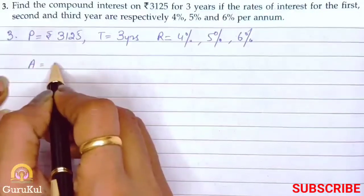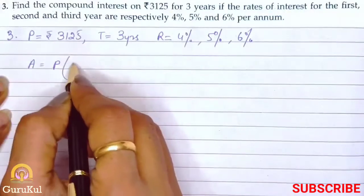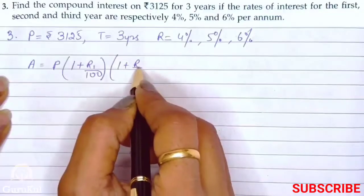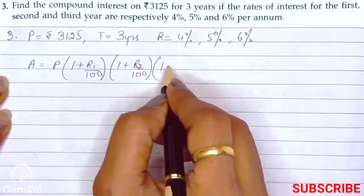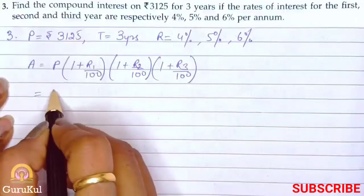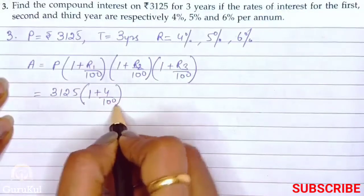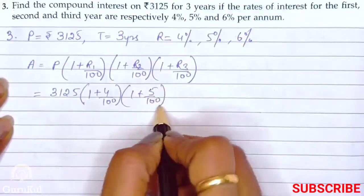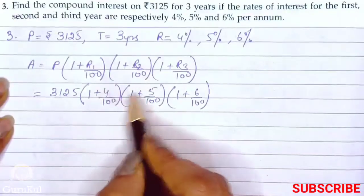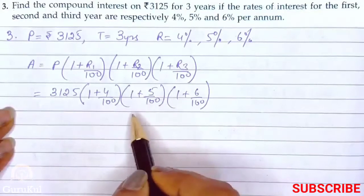In order to find the amount, since there are 3 years and 3 different rates, the formula is: A = P bracket 1 plus R1 by 100 bracket closed, into 1 plus R2 by 100 bracket closed, into 1 plus R3 by 100 bracket closed. If you want, you can reduce the fractions here itself so that your calculation ahead is easier.